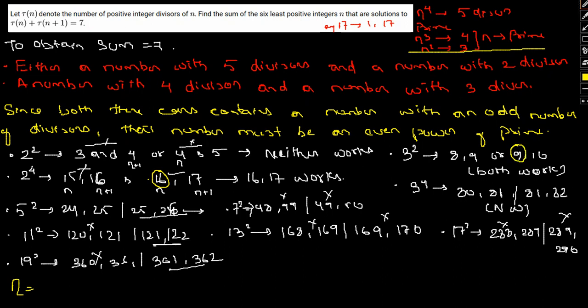For 3⁴, neither work. For 5², 25 works. For 7², neither works. For 11², we have 121. So n would be 8 + 9 + 16 + 25 + 121 + 361, which gives us the sum of 540.